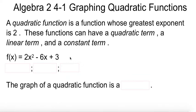Looking at this function, for example, 2x-squared minus 6x plus 3, the quadratic term is 2x-squared, the whole thing there. The linear term is the minus 6x or negative 6x, and the constant term is 3. If one of those two terms is missing, it's not in the problem, then it would be 0.